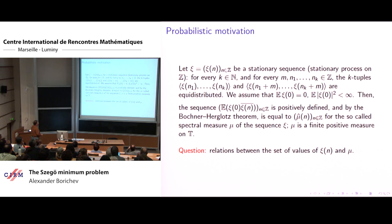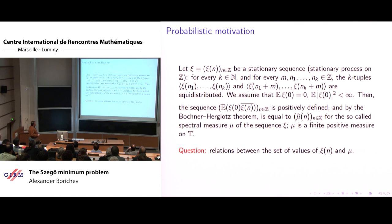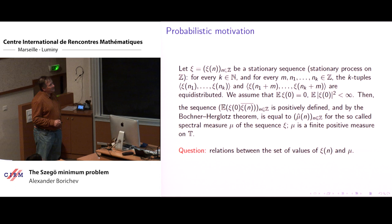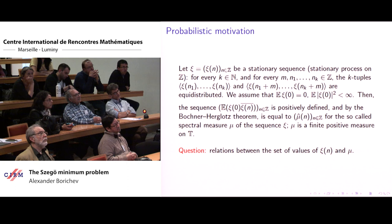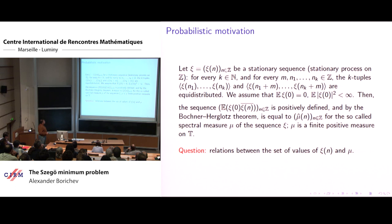Later on, we assume that our random variables zeta, zeta zero, and all the other zetas have finite second moment. For normalization, we assume that the expectation is equal to zero. Now we can consider the covariance sequence with integer indices. It's easy to see that this sequence is positively defined, so by the Bochner-Herglotz theorem, they are the Fourier coefficients for the so-called spectral measure mu of our sequence zeta — a finite positive measure on the unit circle.